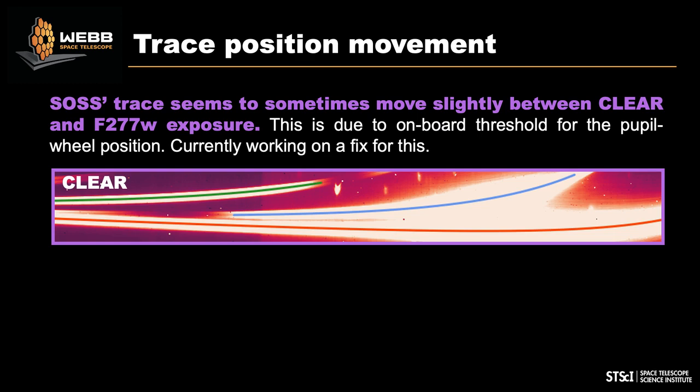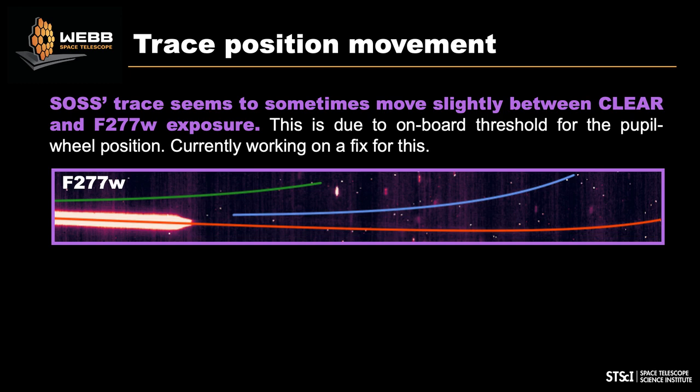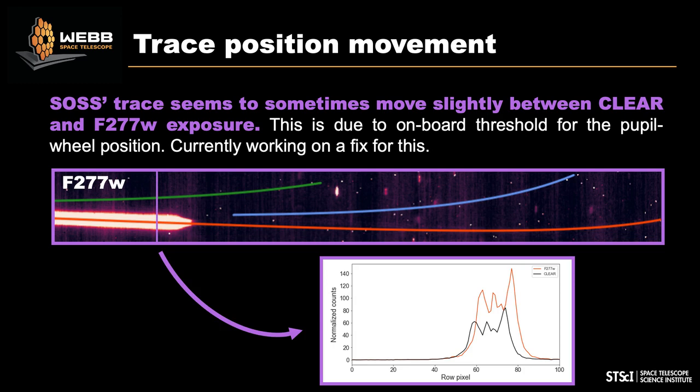There are two kinds of trace position movements to be aware of. First, the SOSS trace sometimes moves slightly between the CLEAR and F277W exposures. The F277W filter blocks all light except above 2 microns, useful for contamination and order overlap models. The onboard mechanism has a detail where, if the pupil wheel doesn't arrive within a certain threshold, it readjusts in the next exposure, which can produce a shift in the cross-dispersion profiles.